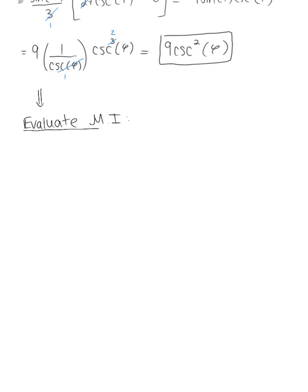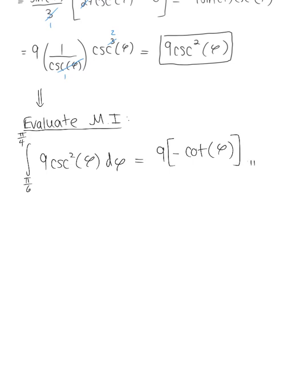We now plug this back in to evaluate the middle integral. The middle integral is with respect to phi: the integral from pi/6 to pi/4 of 9 cosecant squared of phi, d-phi. This integrates to 9 multiplied by negative cotangent of phi, evaluated from pi/6 to pi/4.